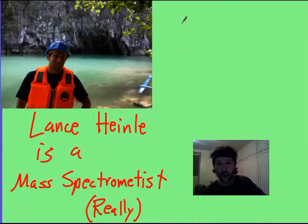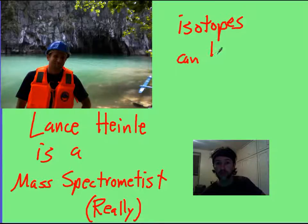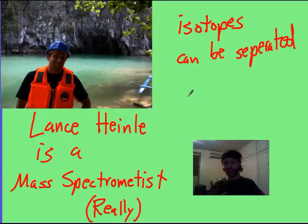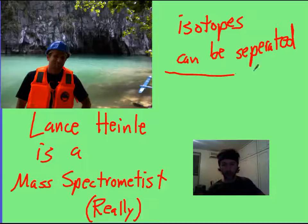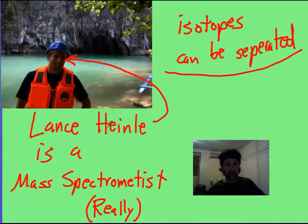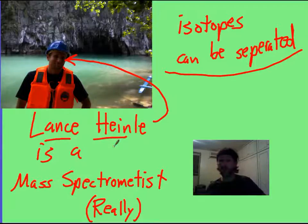A nice thing about a mass spectrometer is that isotopes can be separated. Because they've got the exact same charge, but since they have different masses, they're going to follow slightly different paths through the mass spectrometer. And a little-known piece of trivia, one of my best friends, this guy right here, is an actual mass spectrometist, Lance Hindley is, because he can measure so precisely what the mass of particular atoms is or maybe what the mass of particular compounds are.